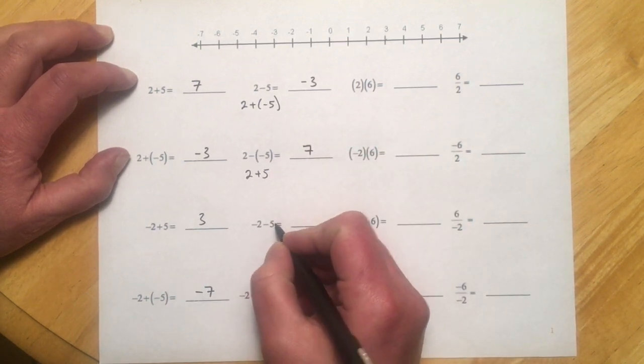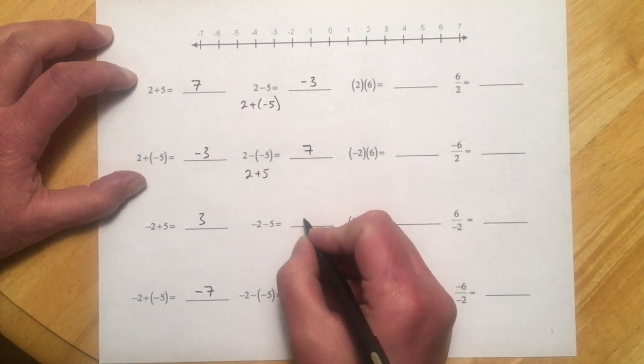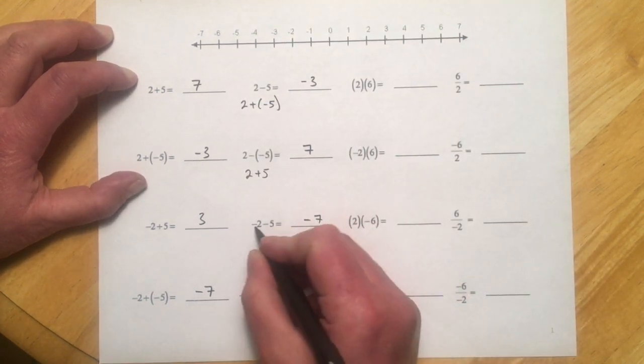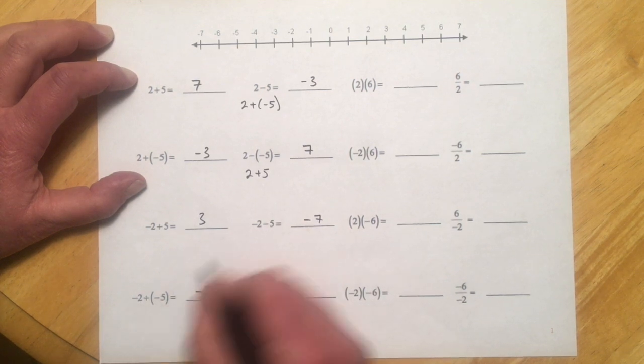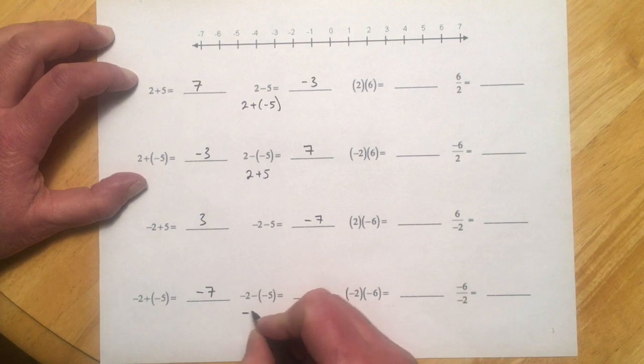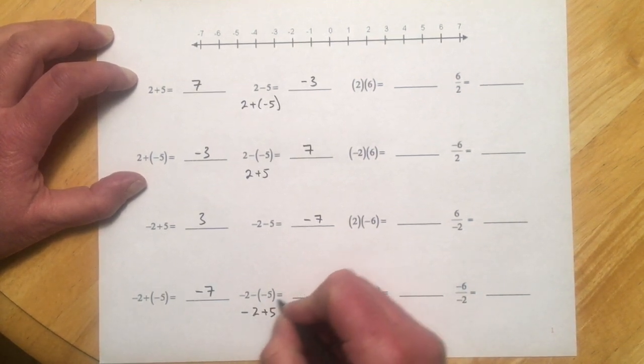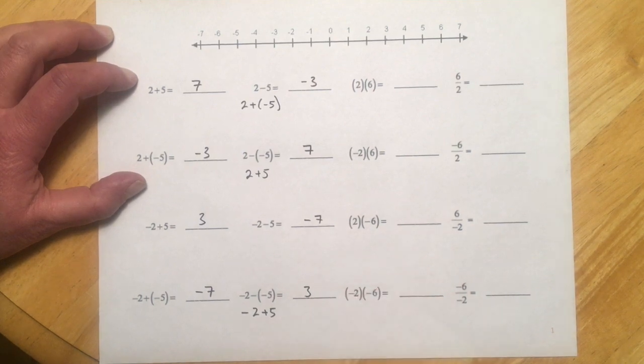Down 2, down another 5, so we're going 2 in the hole, and then another 5 in the hole. So that's negative 7, so this is just like this one, negative 2 plus negative 5, same problem. And here, again with the double negative, so 2 plus 5, down 2, back up 5, gets us to 3.